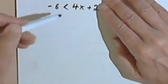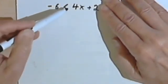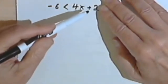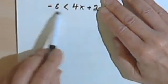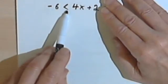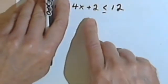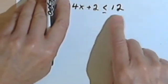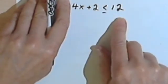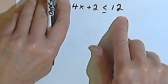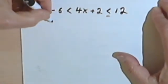Here's what we're going to do. I'm thinking, if all I had was negative 6 is less than 4x plus 2, my first step would probably be to subtract 2 from both sides of this inequality sign. And if all I had was 4x plus 2 is less than or equal to 12, my first step would also be to subtract 2 from both sides of the inequality sign. So I'm just going to subtract 2 from everything.